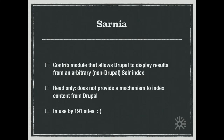We also used a module called Sarnia, which is a contrib module currently only available for D7. It allows Drupal to display results that don't originate from Drupal content — you can use any Solr index and provide results from it. Because of that, it's really read-only; it has no mechanism to push content from Drupal into the Solr core. It was only in use by about 191 sites, which would normally be a warning sign, but for our case it filled the need.